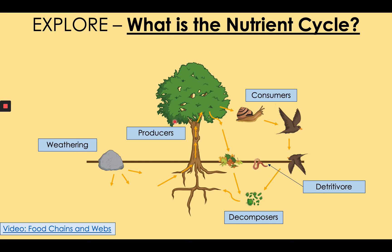This takes all the nutrients from the litter — from the tree, the leaves and the bodies of the consumers — and returns them to the producer. And so you have the nutrient cycle. Weathered rock provides minerals which allow the producer to grow because it creates the fertile soil. The producer's leaves provide litter for the ground which decomposes and adds to the soil. They also provide food for the consumers, which die, which are broken down by decomposers and recycled.